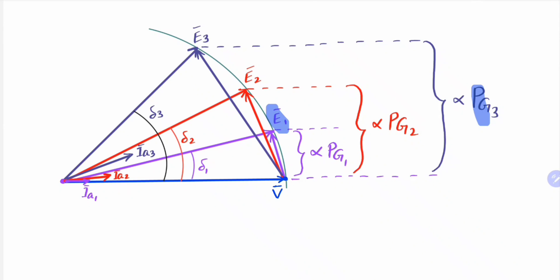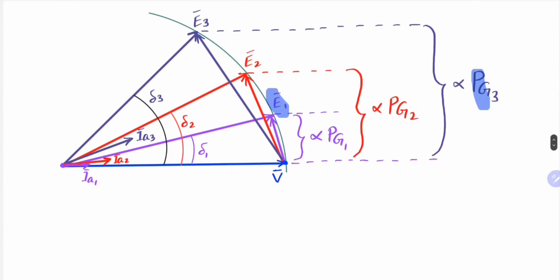Now, if we want our alternator to supply reactive power instead of consuming it, we can adjust the field current. By adjusting the field current, the alternator's reactive power output may be changed — it will start supplying reactive power instead of consuming it. So if we adjust the field excitation so that it starts supplying reactive power, then plotting further we observe that the power factor will increase instead of decreasing.